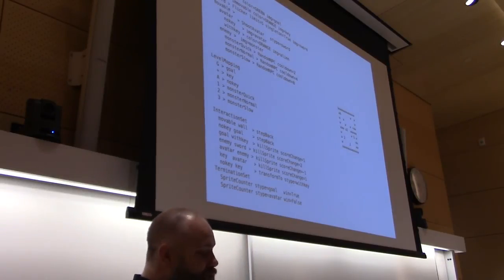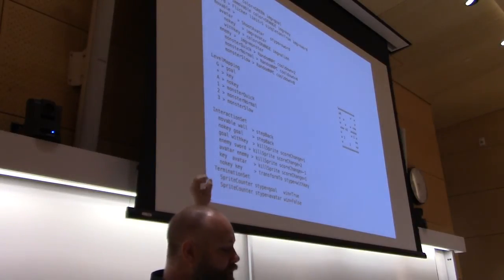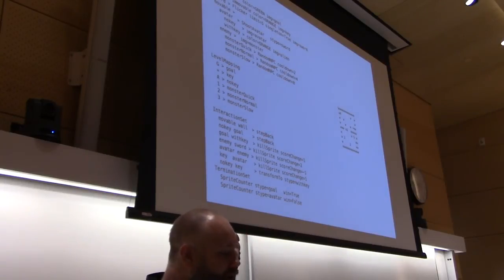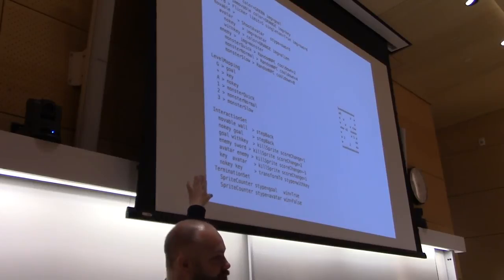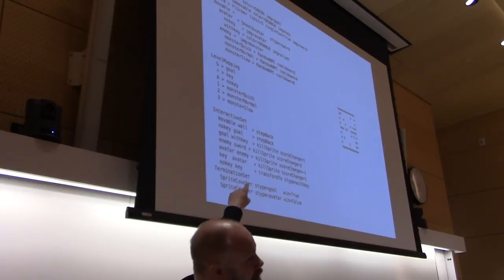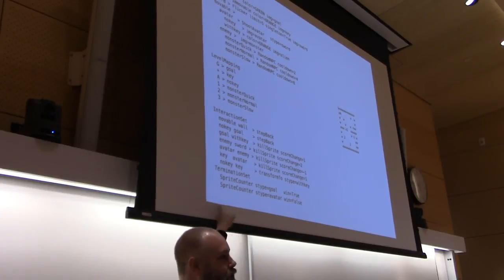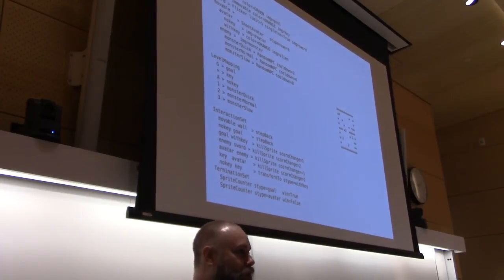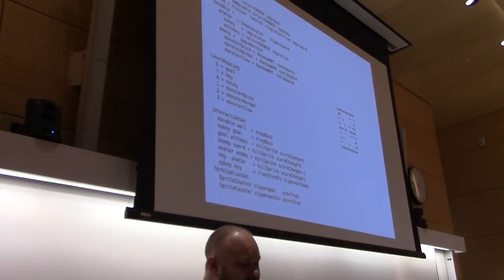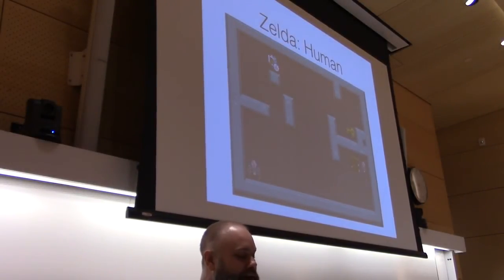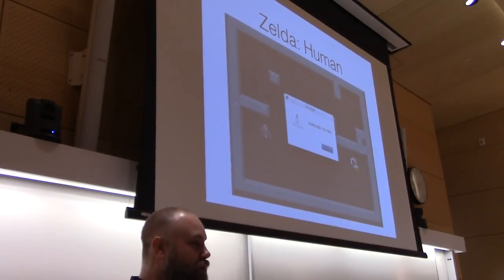Here's a game description: you have a sprite set on top defining everything in the game, a mapping in the middle, and a level description which is a simple ASCII file. Then the interaction set defines what happens when things collide — when an enemy collides with your sword, the enemy dies and you get two points; if you collide with a door and have a key, the door opens and disappears. The termination set says how you win and lose — if there's no avatar, you lost; if there's no door, you won.